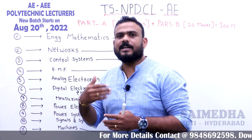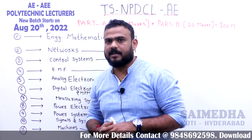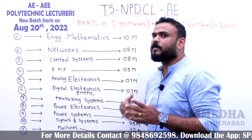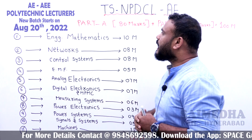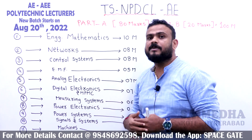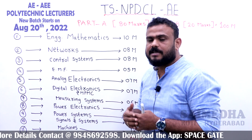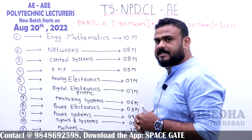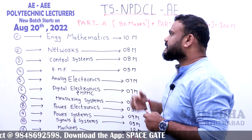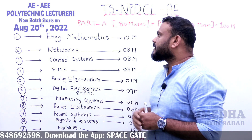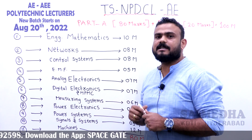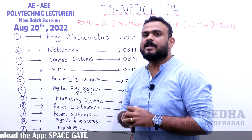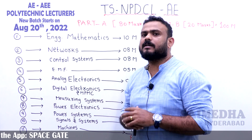Please check out the video link scrolling below, go to the answer key, and check how many marks you are going to get. Let us go with the subject-wise marks — how many marks are allotted and what is the possibility of getting a job. As per Engineering Mathematics, 10 marks have been allotted.